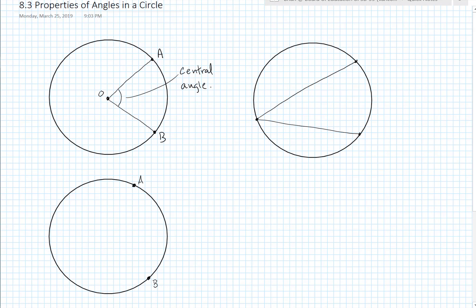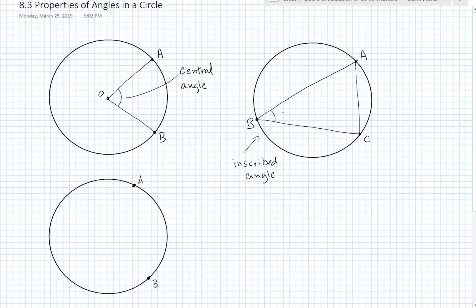If we take three points on a circle — A, B, and C — then angle ABC is called an inscribed angle. It's called an inscribed angle because the three points, the two endpoints and the vertex, form a triangle that is inscribed in the circle. Completing the triangle gives three interior angles, and each one of them is an inscribed angle. If we're referring to angle ABC, then ABC is an inscribed angle, and in particular it contains a specific arc.